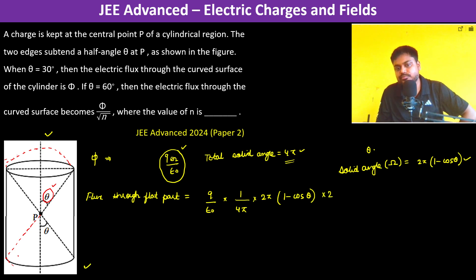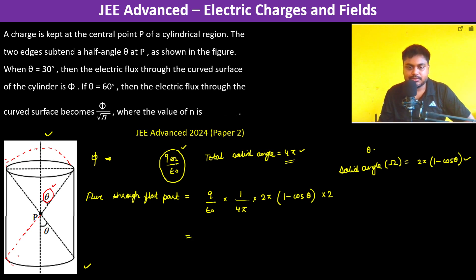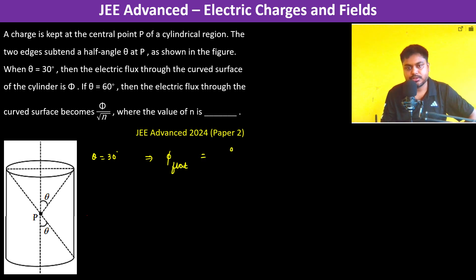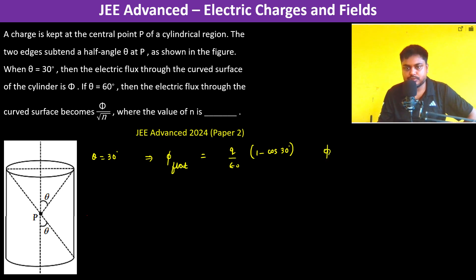This expression accounts for both flat parts, so we multiply by 2. The flux through both flat parts simplifies to Q divided by epsilon naught times (1 minus cos theta). Therefore, when theta is equal to 30 degrees, the flux through the flat part is equal to Q divided by epsilon naught times (1 minus cos 30 degrees).